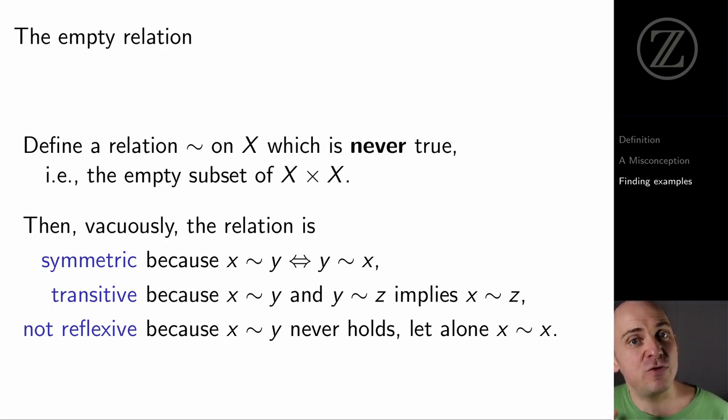But reflexivity is really a different beast. Reflexivity isn't a conditional statement. It's actually the statement that for all x in big X, x tilde x. And I mean, we cooked up the empty relation to be a relation that never holds. And consequently, it's not reflexive because it's never the case that x tilde y. And in particular, it's not the case that x tilde x.